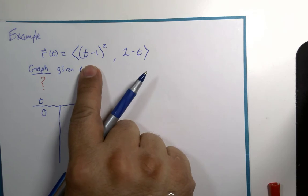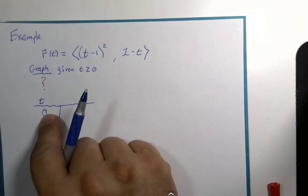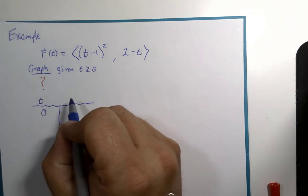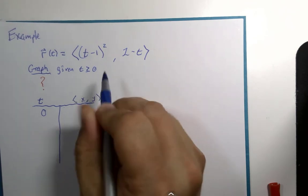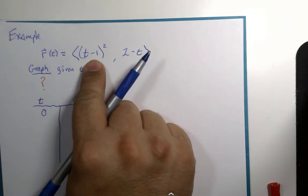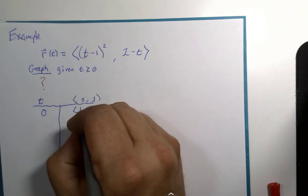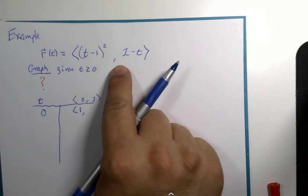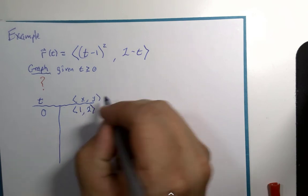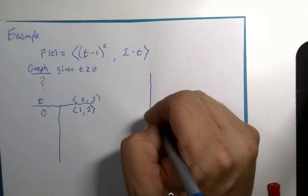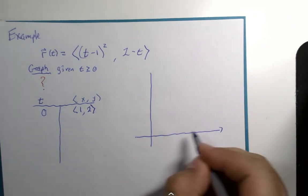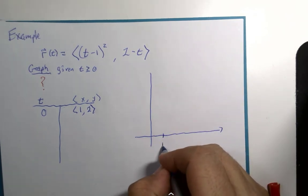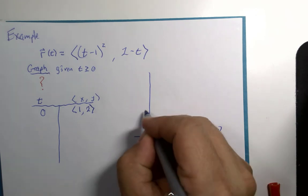And we just found out what we got when we plugged in the values. So if t is zero, the x component: zero minus one is negative one squared is positive one is one. And two minus zero is two. If I were to be on regular graph paper I could maybe make this a little bit prettier but I don't think this is going to be terrible.